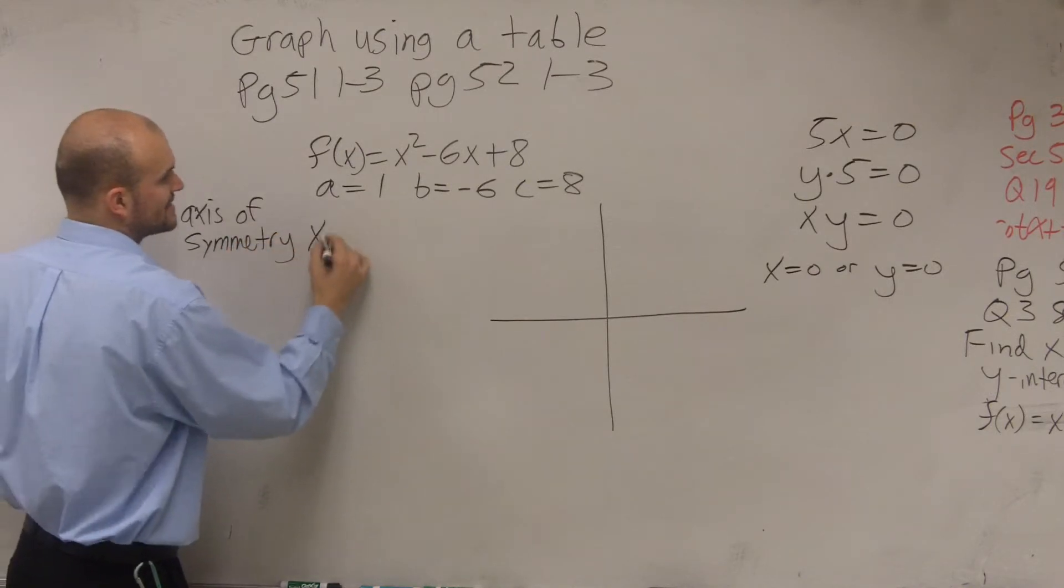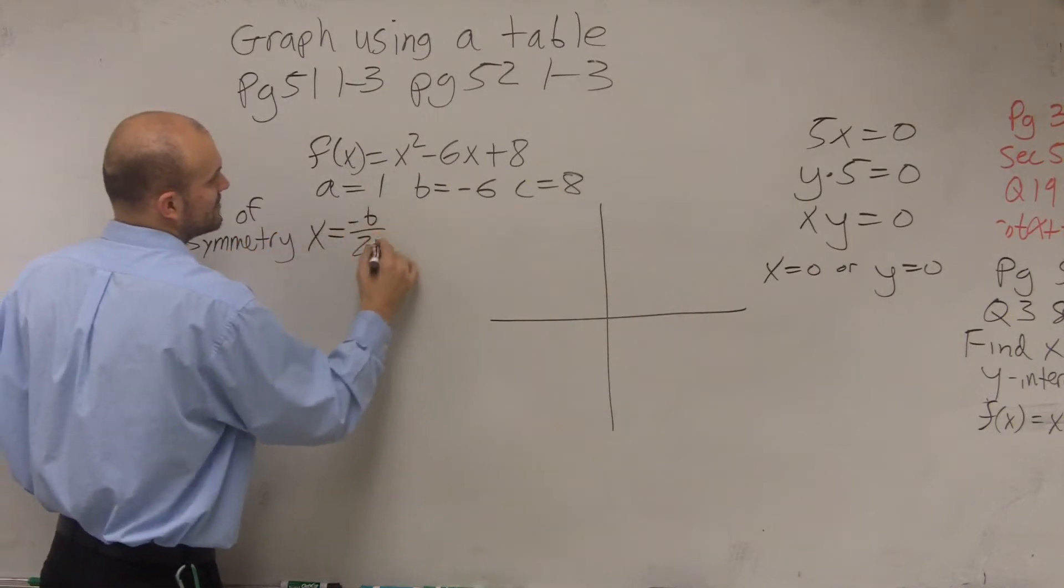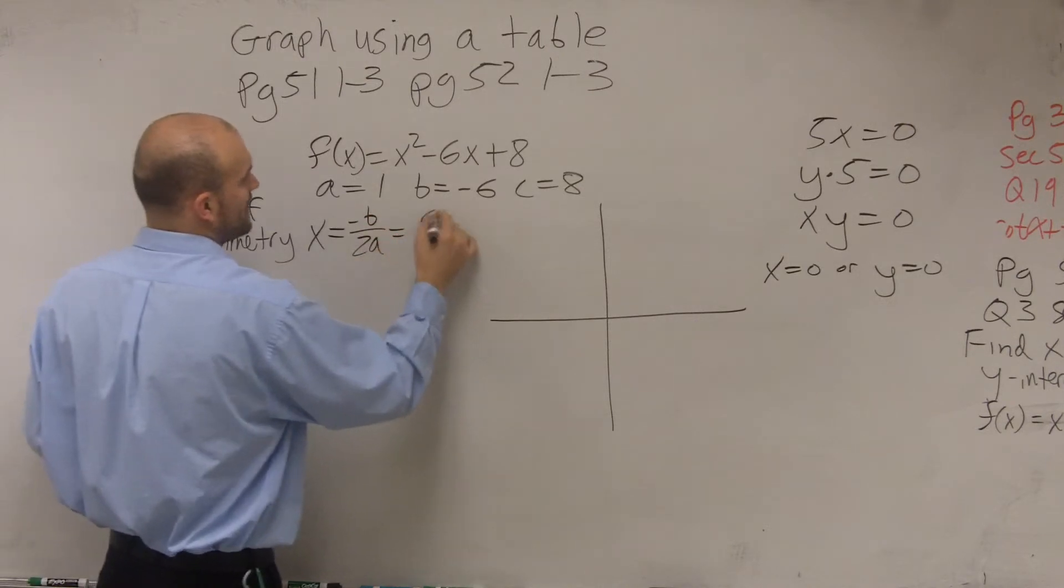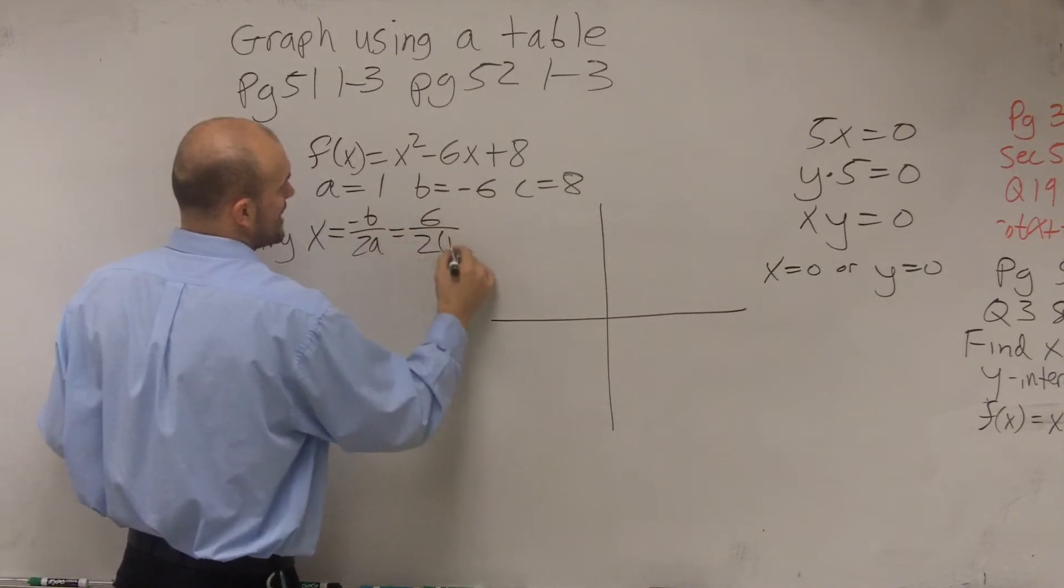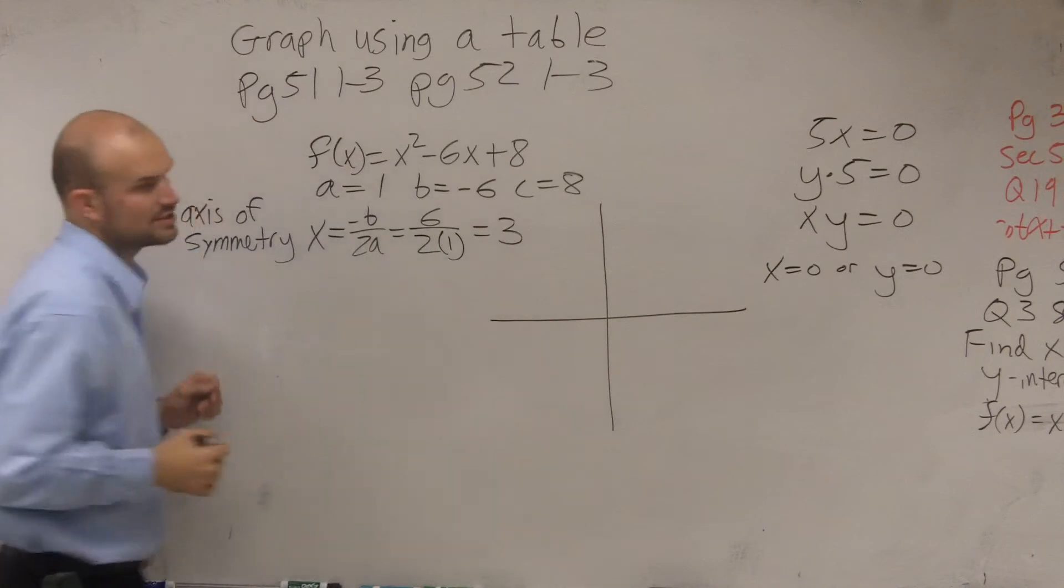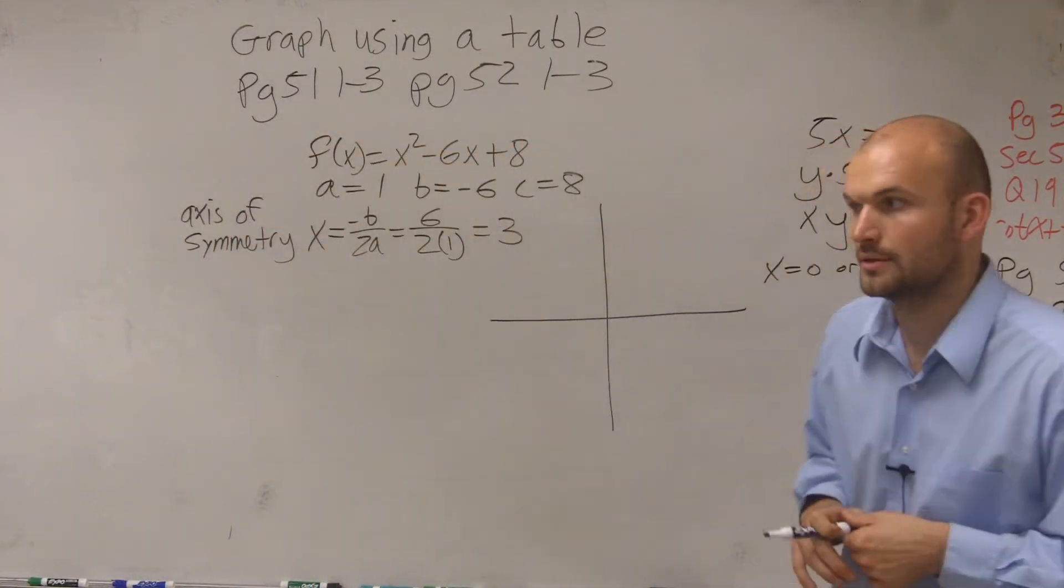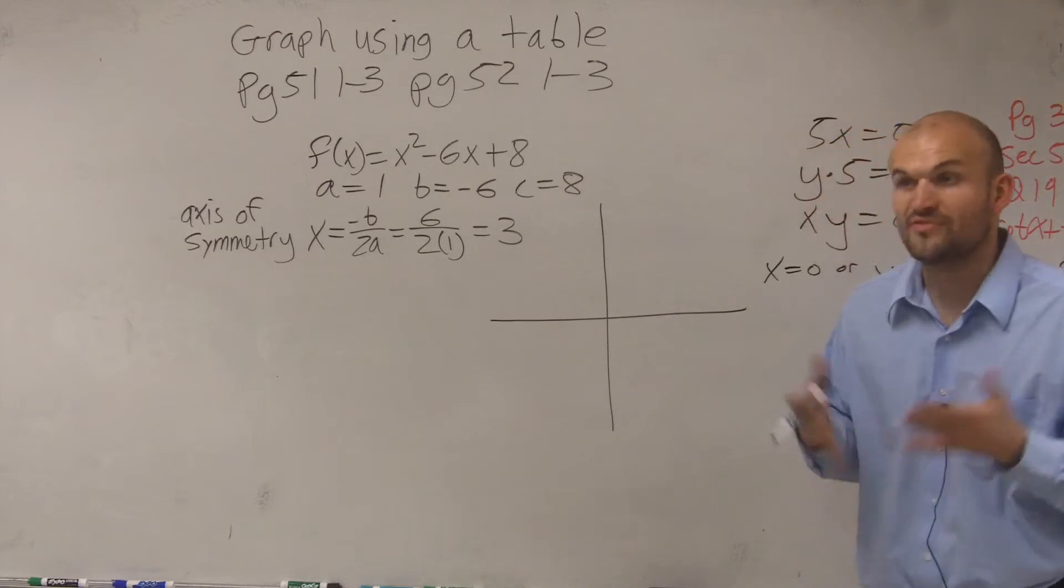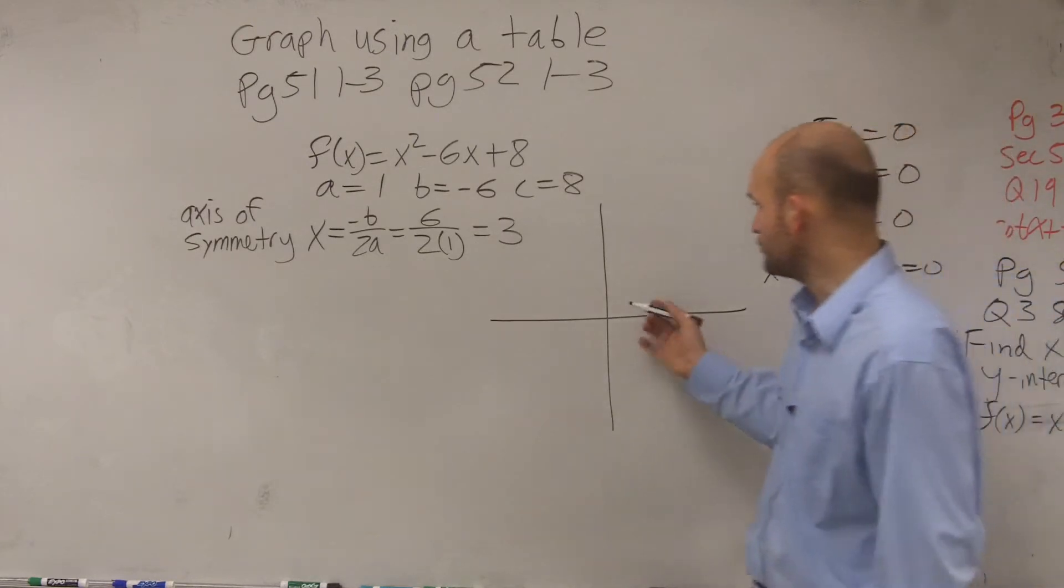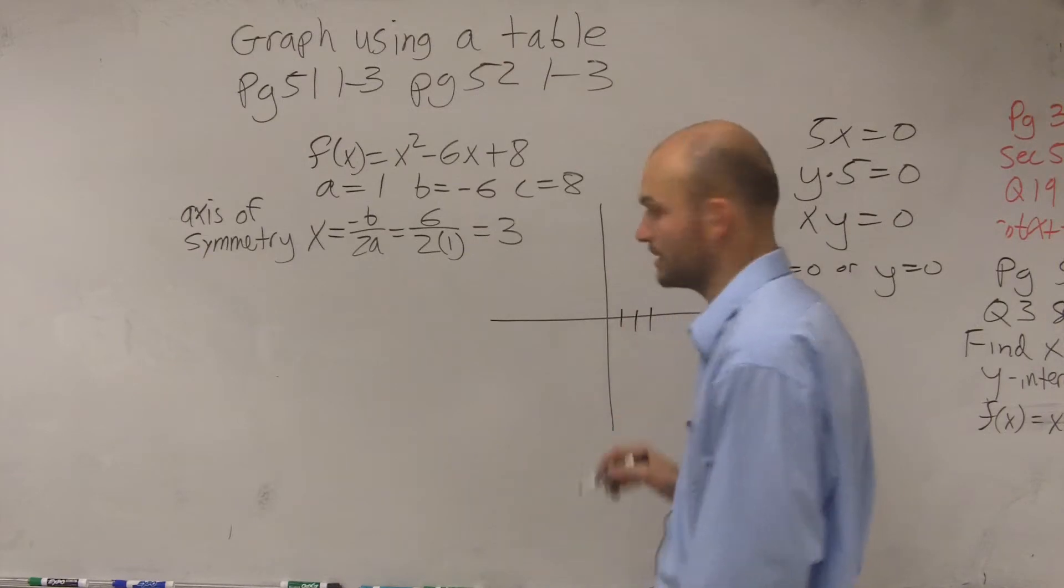So the first thing we want to do is find the axis of symmetry. The axis of symmetry is x equals opposite of b divided by 2a, which equals positive 6 divided by 2 times 1, which in this example is 3. So that's our axis of symmetry. So what we do is we go over and we plot 3: 1, 2, 3.